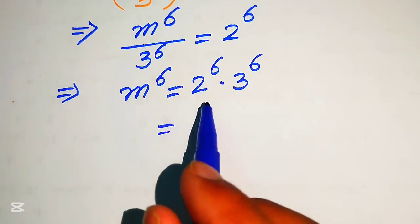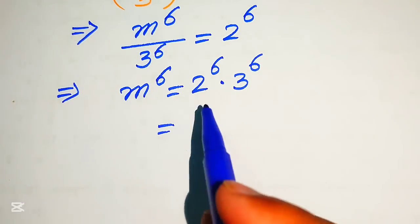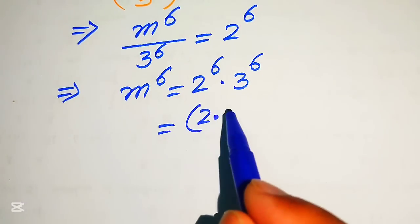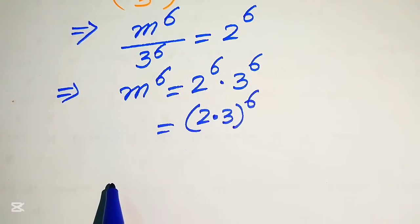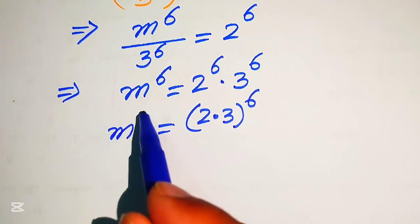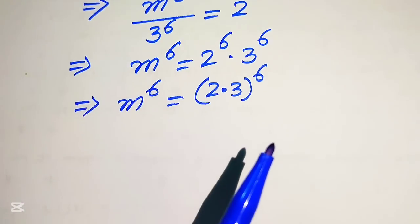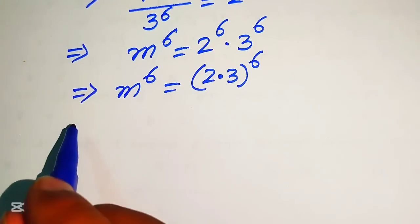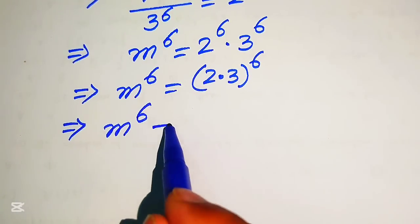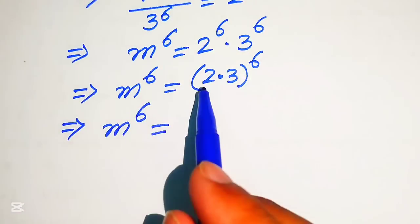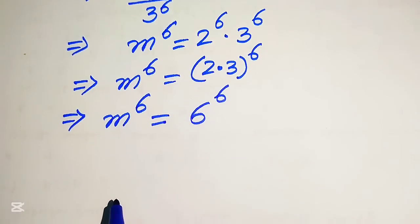We need to combine the exponents of these two terms. It will be written as 2 multiplied by 3, with its whole exponent being 6, and on the left hand side we have m to the power of 6. Simplifying, we write m to the power of 6 equals to 6 to the power of 6, since 2 times 3 is 6.